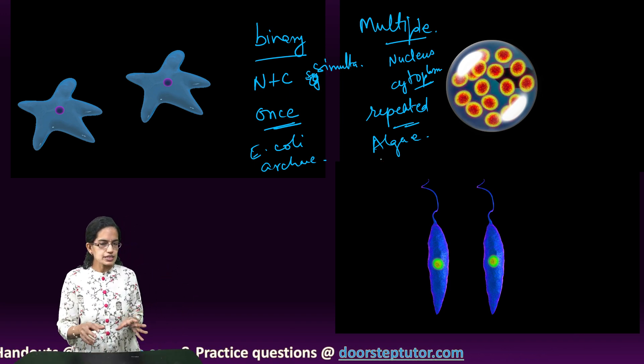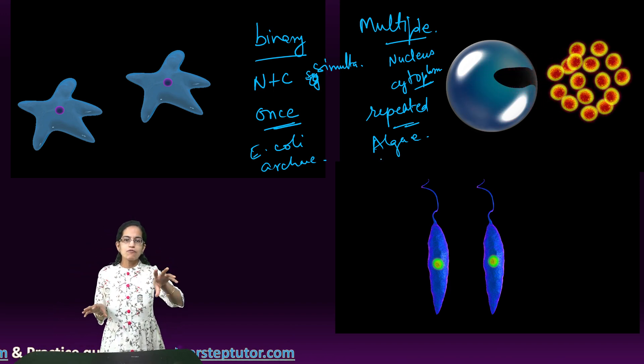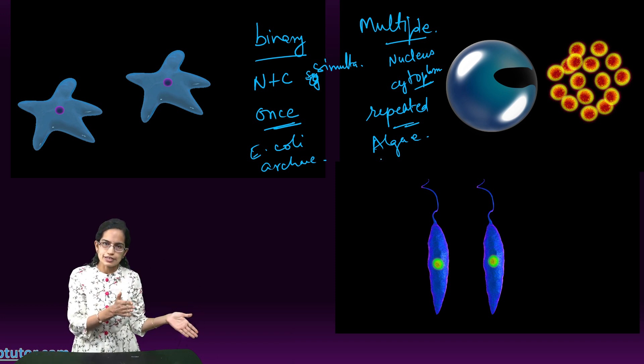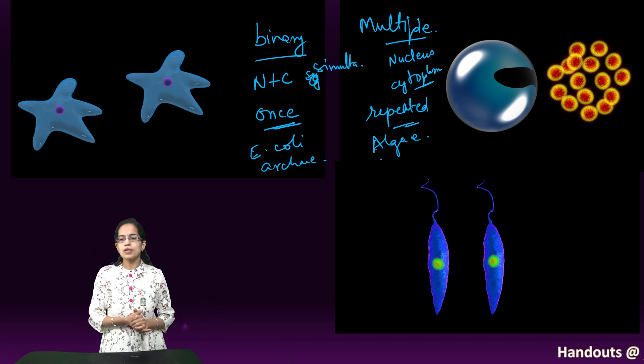That's the major difference here. As we see, in the case of multiple fission, there is division of nucleus followed by cytoplasm, repeated division, multiple copies being produced.